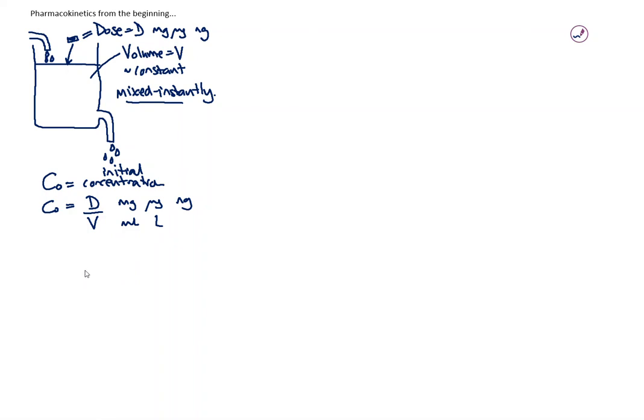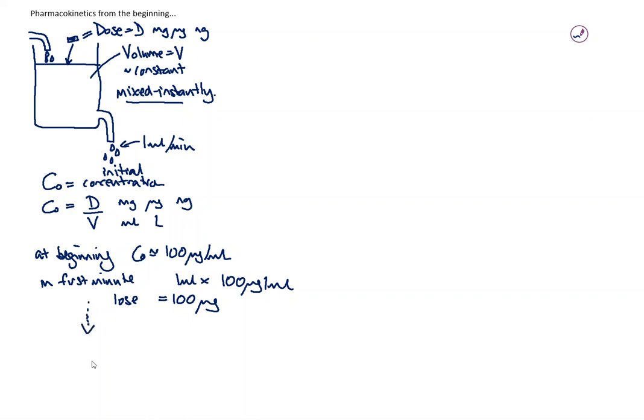Let's put some numbers to this. Say C naught is 100 micrograms per mil and the outflow is one mil per minute. In the first minute we'll lose one mil of 100 micrograms per mil, so we lose 100 micrograms in the first minute.